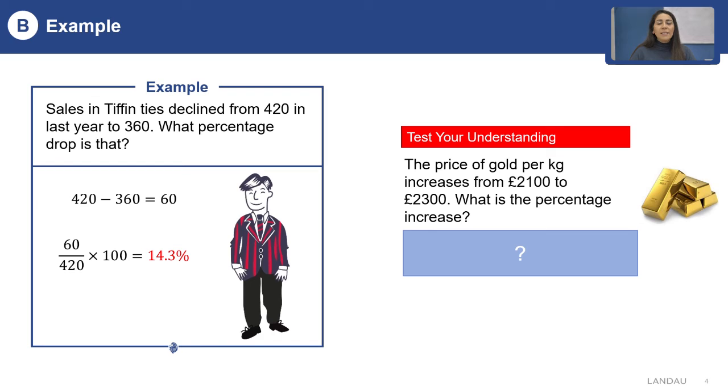First, let us find the actual change. 2300 minus 2100 will be 200. This is the actual change.